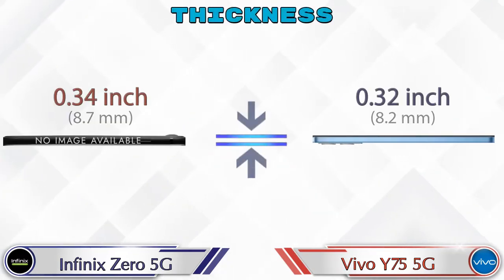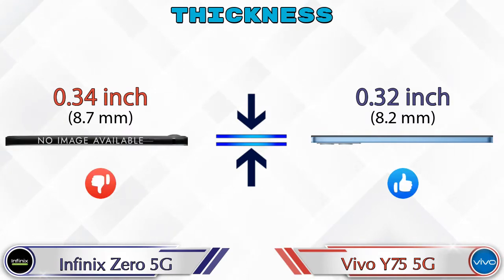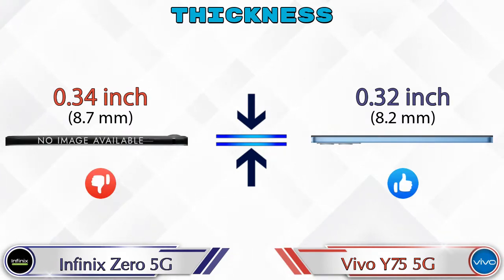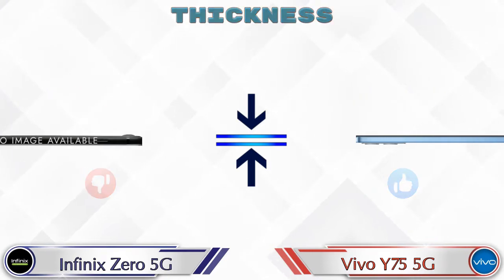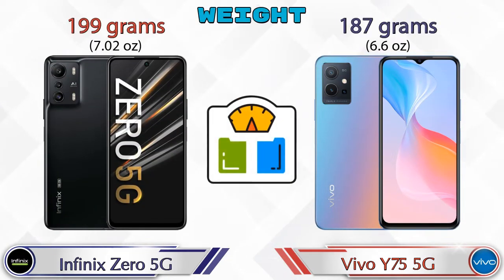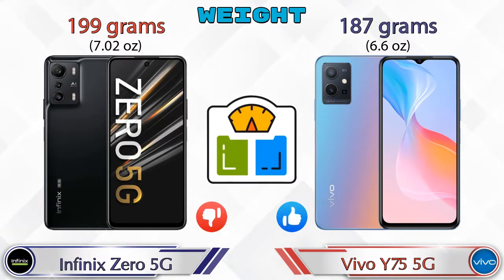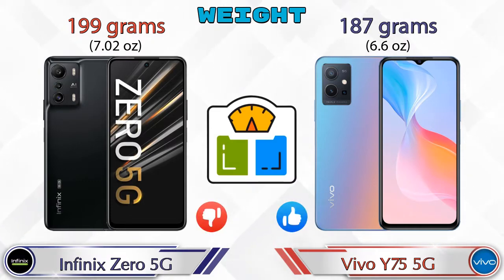For thickness, the Zero 5G is 0.34 inches and the Y75 5G is 0.32 inches. In terms of weight, the Zero 5G is 199 grams while the Y75 5G is lighter at 187 grams.